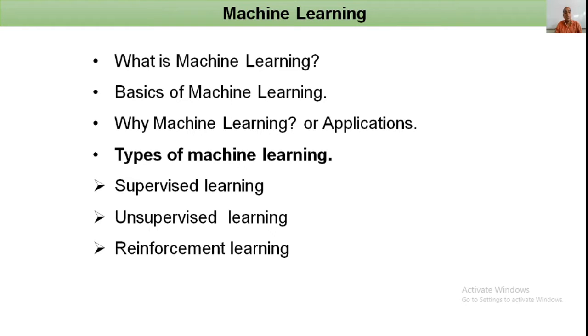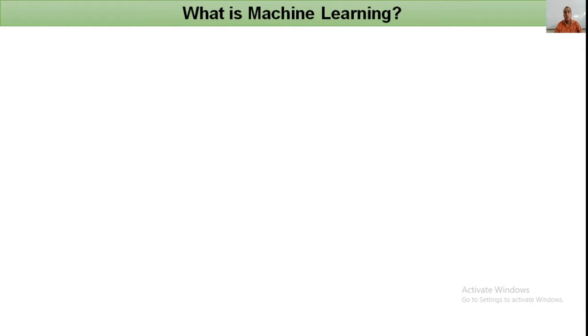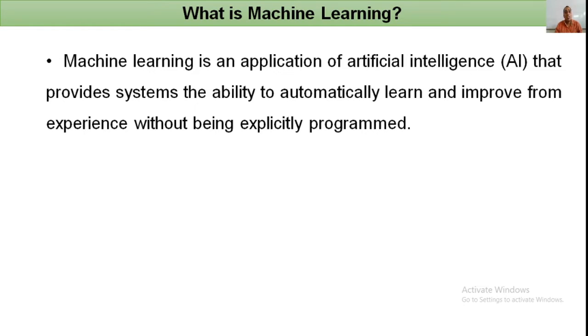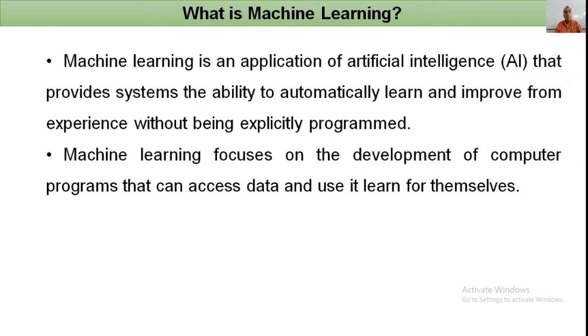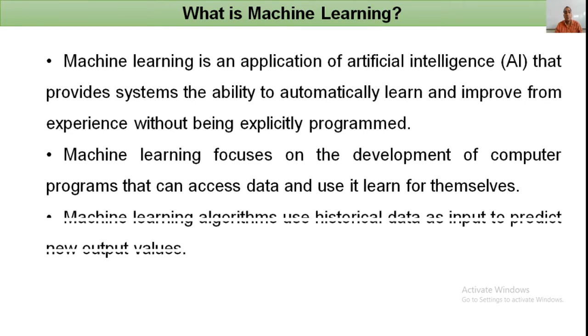What is machine learning? As we know, humans learn from past experience and machines follow instructions given by humans. But what if humans can train machines to learn from past experience? That is machine learning. Machine learning is an application of artificial intelligence that provides systems the ability to automatically learn and improve from experience without being explicitly programmed.